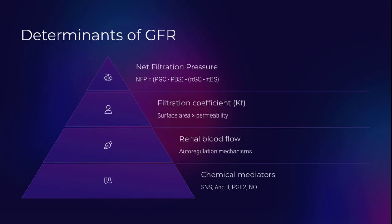GFR is not arbitrary. It depends on net filtration pressure — the balance of glomerular capillary pressure, Bowman's pressure, and oncotic forces — and filtration coefficient, which includes surface area and permeability. Add renal blood flow and neurohumoral control, and you have a dynamic filtration engine.